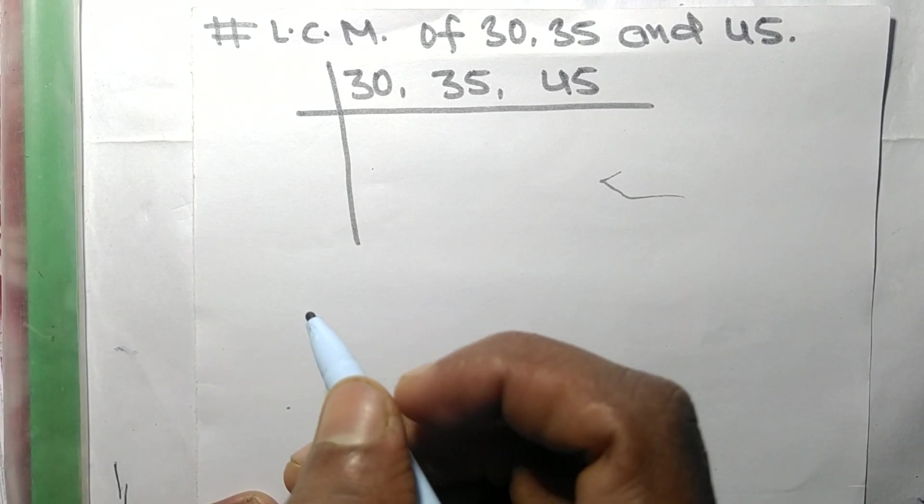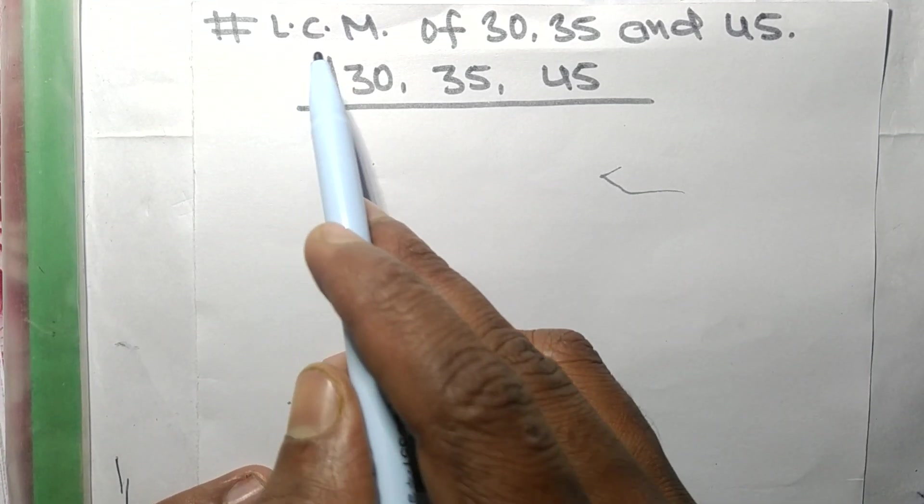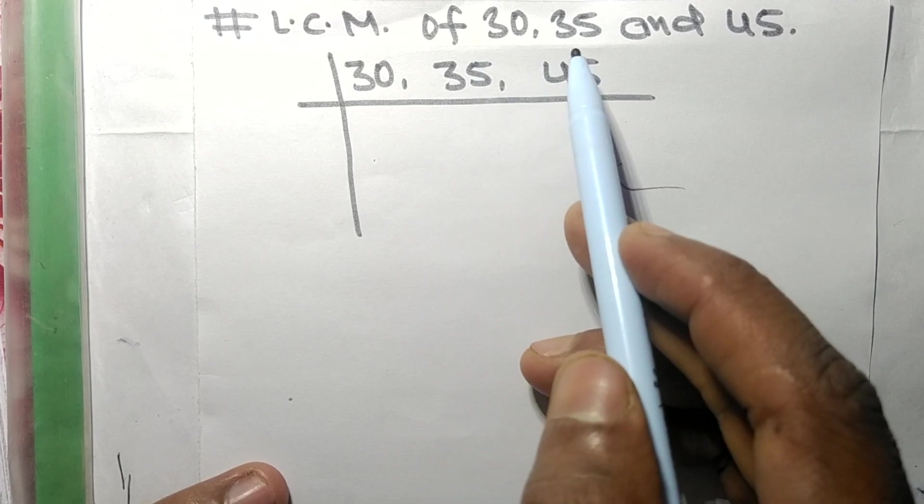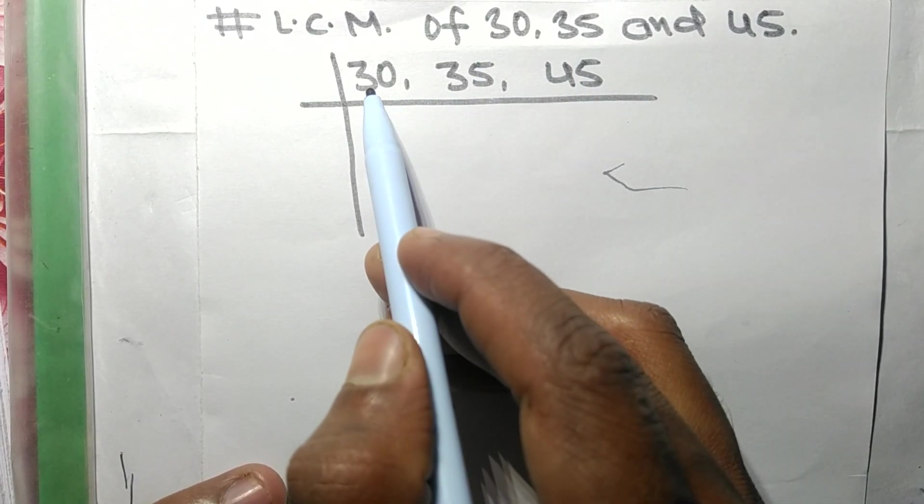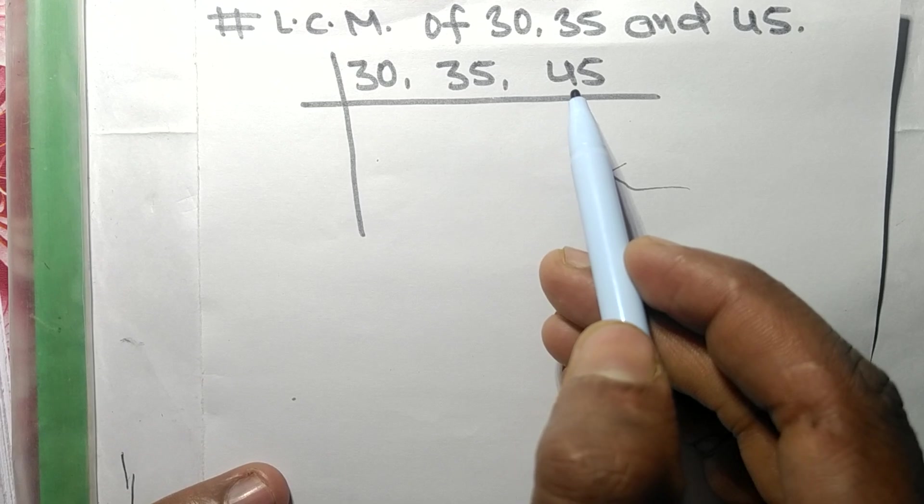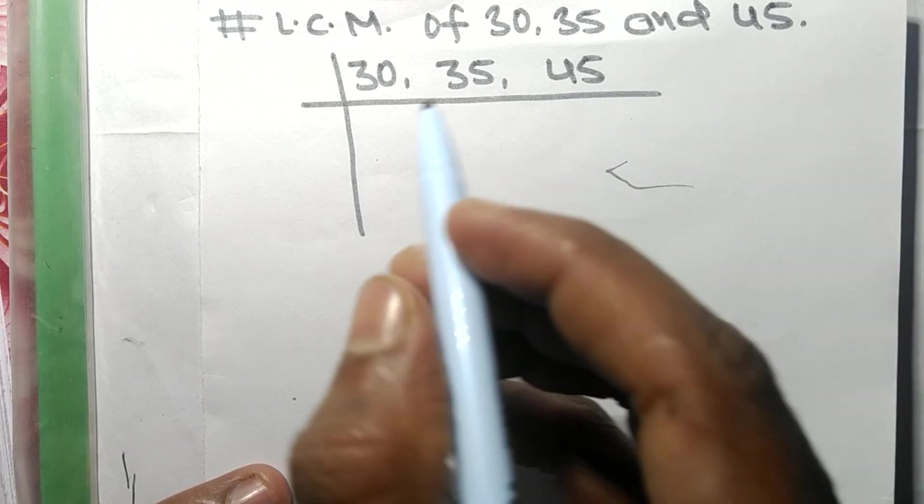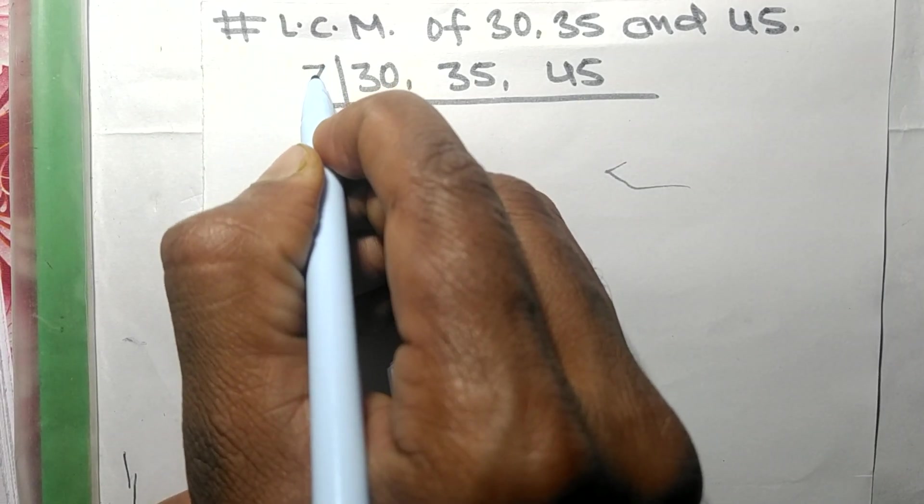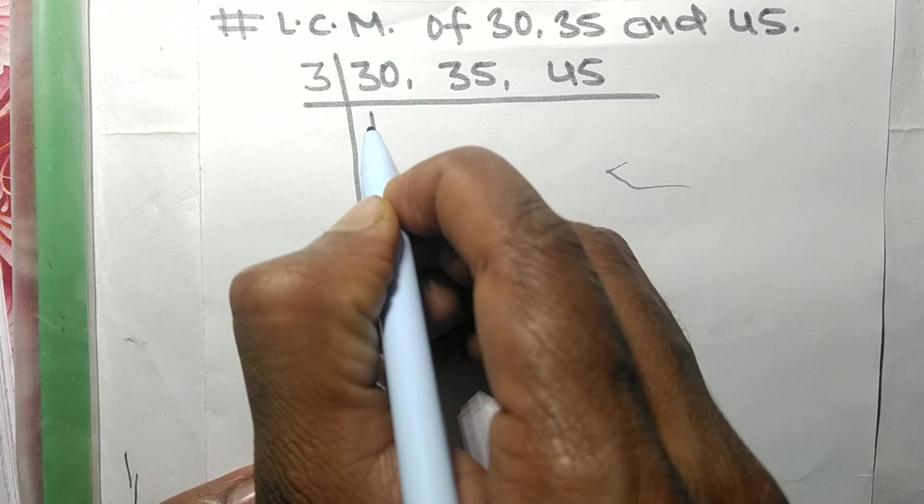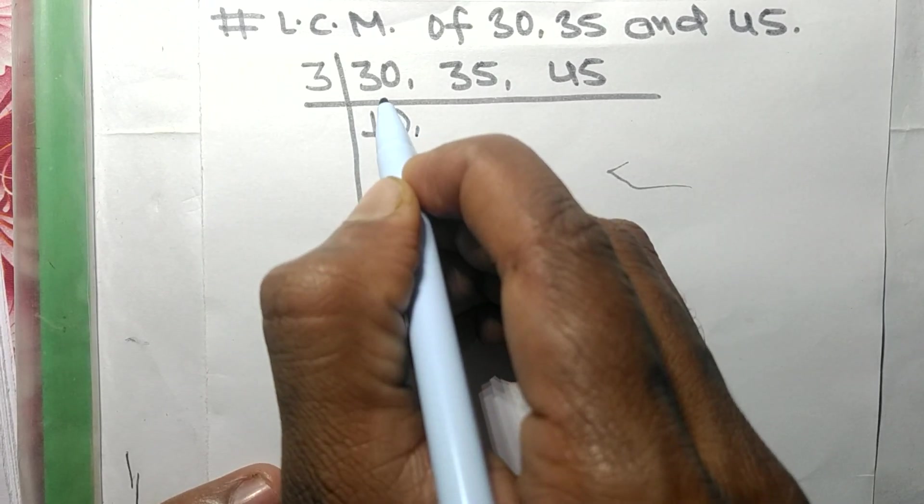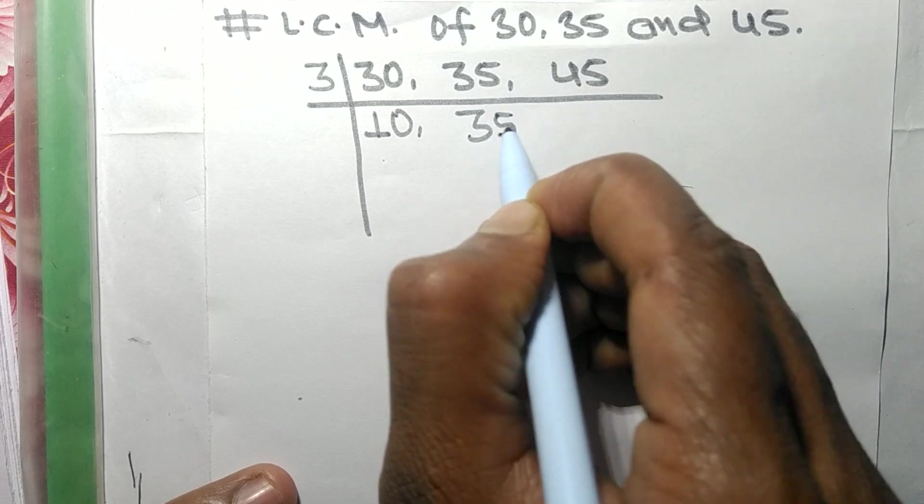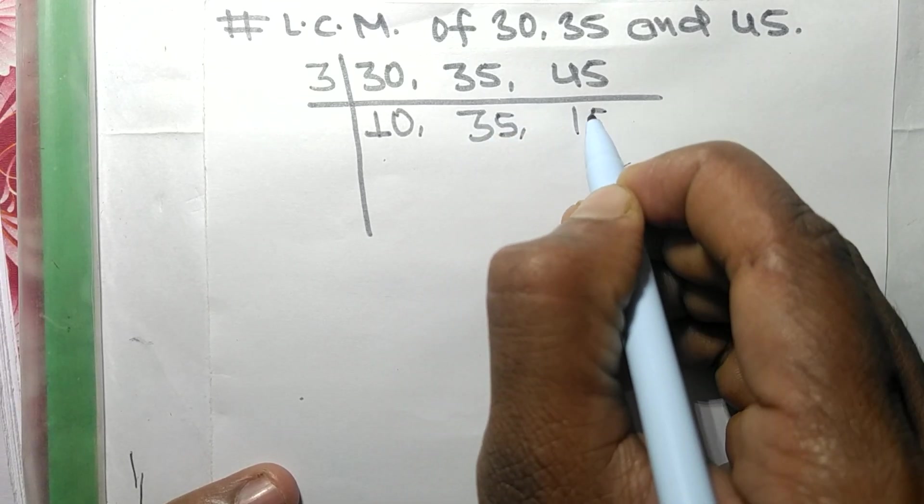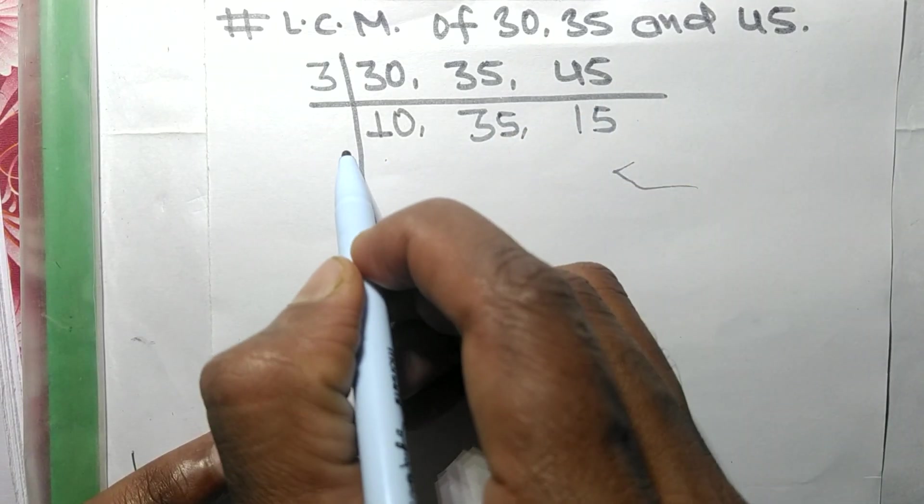Today in this video we shall find the LCM of 30, 35, and 45. So 30 and 45 are exactly divisible by 3. 3 times 10 equals 30, 35 is not divisible so it stays the same, and 3 times 15 equals 45.